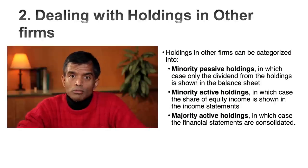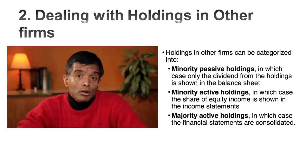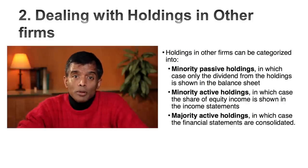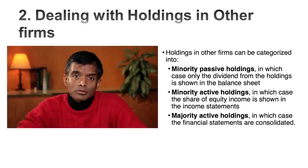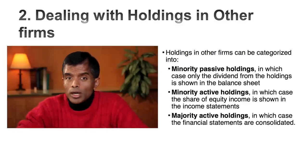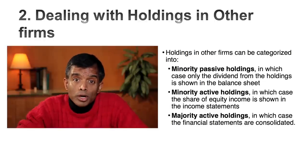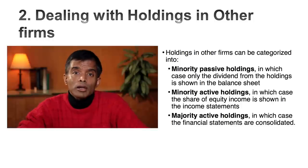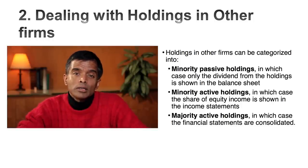If you invested 20 million in a young growth company ten years ago that's now worth a hundred billion, the income statement may show nothing because the company pays no dividend, and the balance sheet still shows 20 million. That's the weakness of minority passive investment. The next step up is the equity approach — if you own 5 to 15 percent and take some role in running the company. You must show your proportional share of net income or net loss below the operating income line, and update your original investment for retained earnings accumulated since.